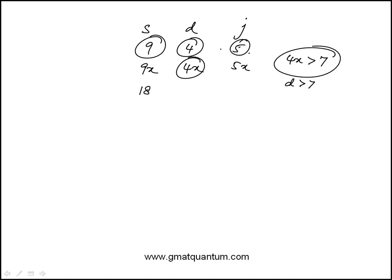So we could have twice these: 18, 8, and 10, or triple: 27, 12, 15, and so on.